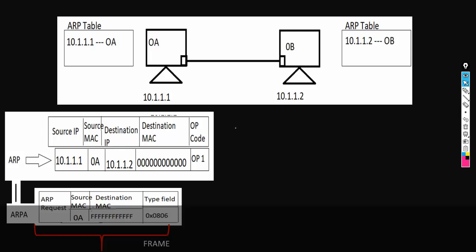Let's say we have two machines, Machine A and Machine B. They are connected with the help of a cable. The IP address of Machine A is 10.1.1.1 and its MAC address is 0A. The IP address of Machine B is 10.1.1.2 and its MAC address is 0B.